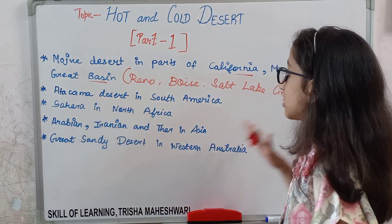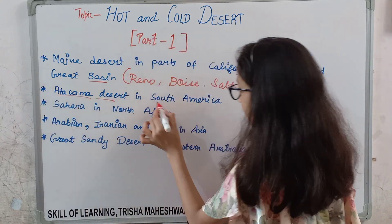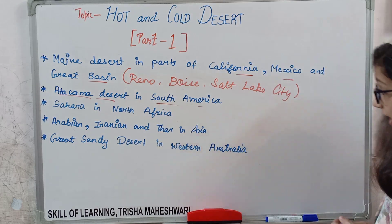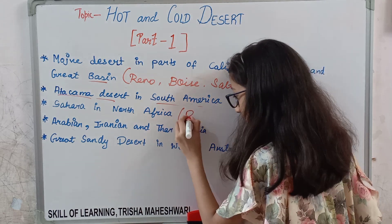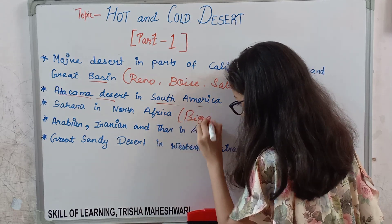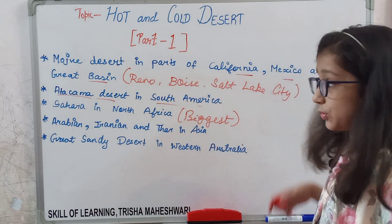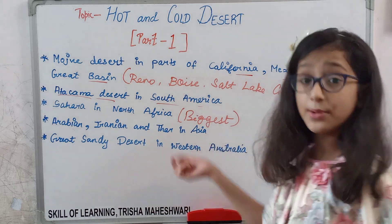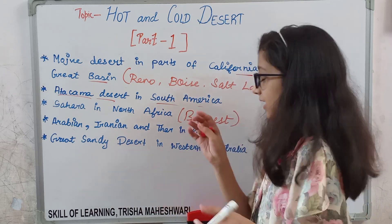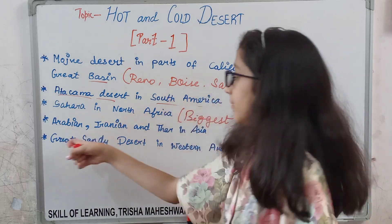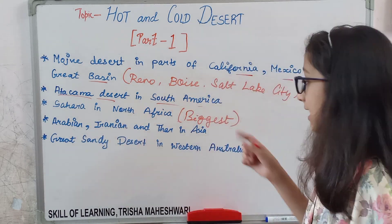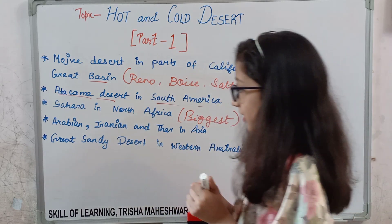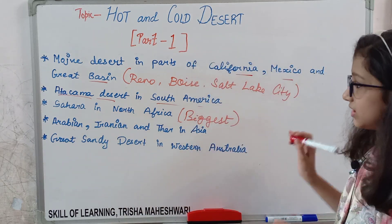Next is the Atacama Desert in South America. Then the Sahara Desert in North Africa — that is the biggest desert. Also the Arabian, Iranian, and Thar deserts in Asia. The Thar Desert is in India, specifically in Rajasthan. And finally the Great Sandy Desert in Western Australia.